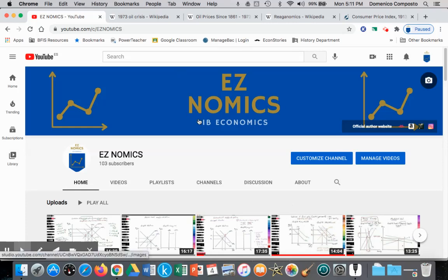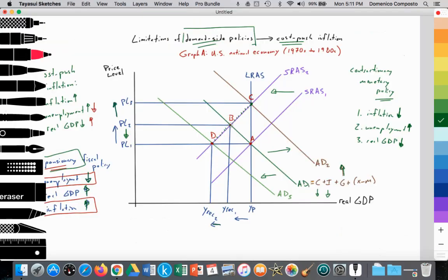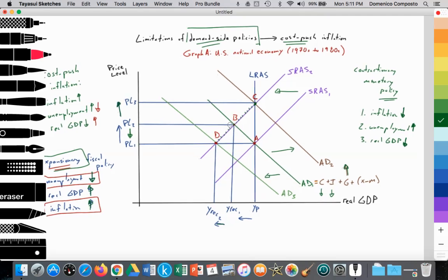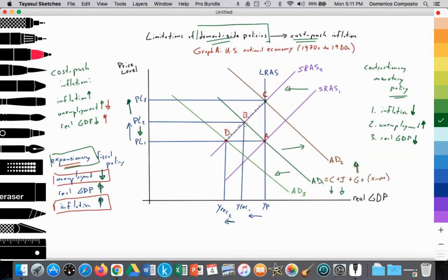In the first part, we looked at the limitation of demand-side policies. We're at point A, we move to point B, we have cost-push inflation, a supply shock, and we saw how demand-side policies are limited in their ability to tackle both rising inflation and rising unemployment at the same time.